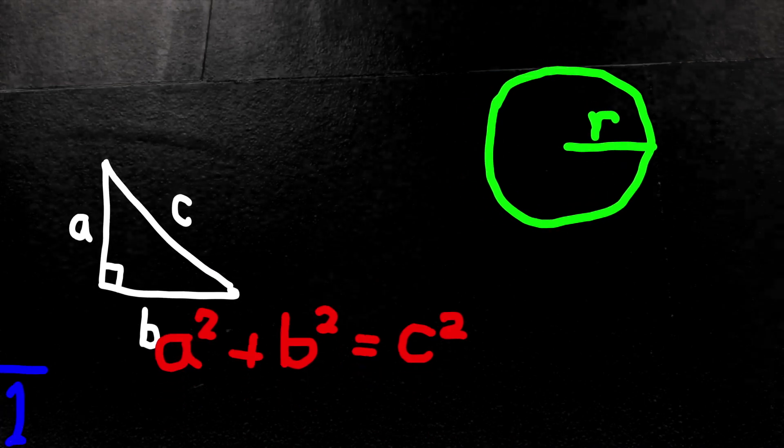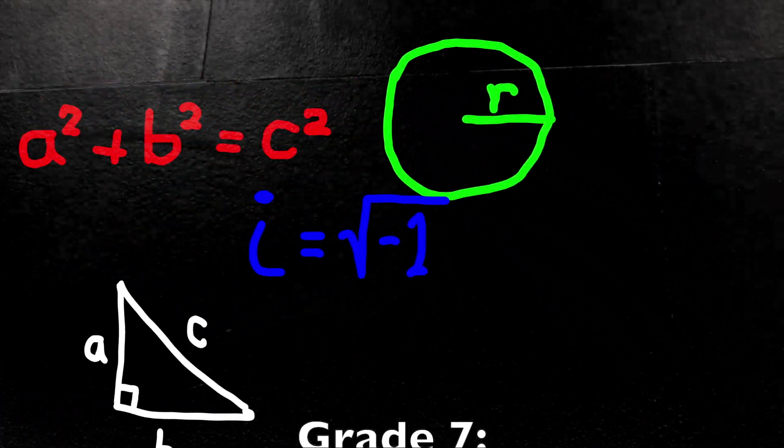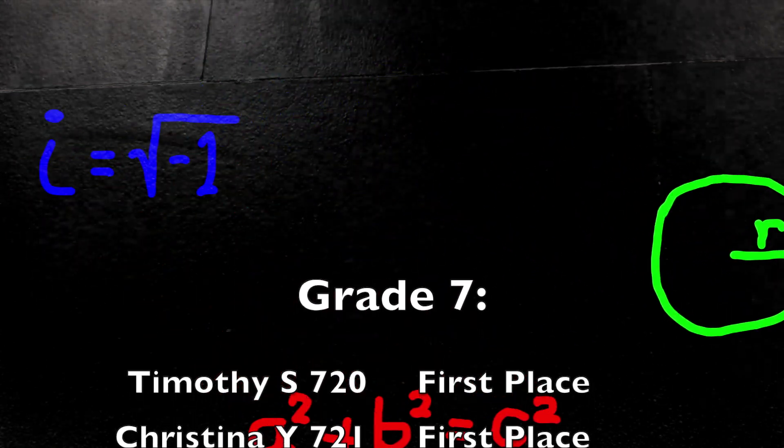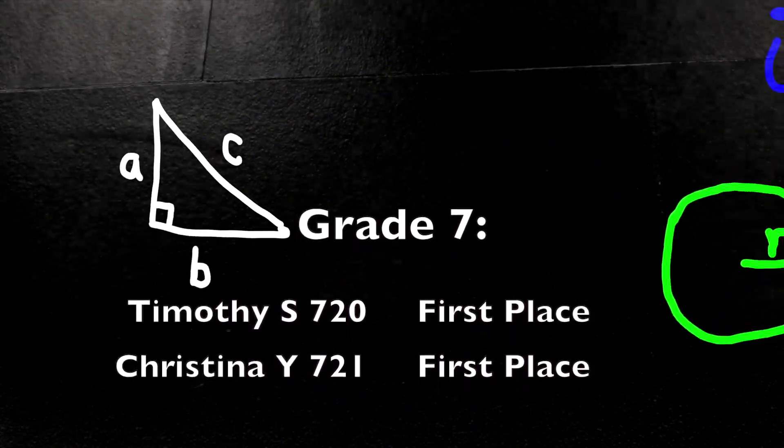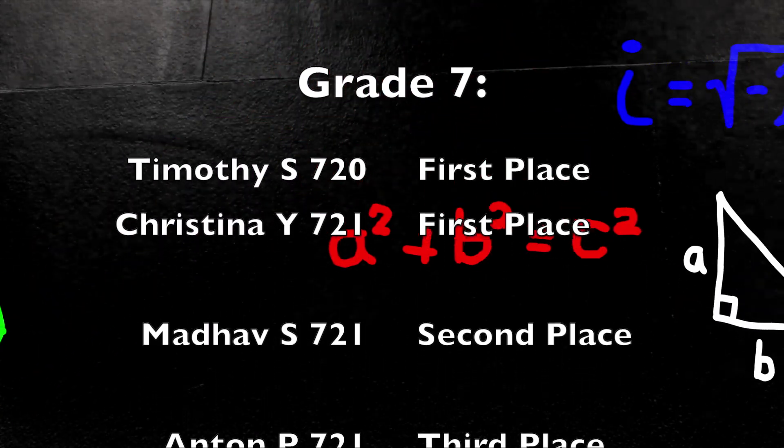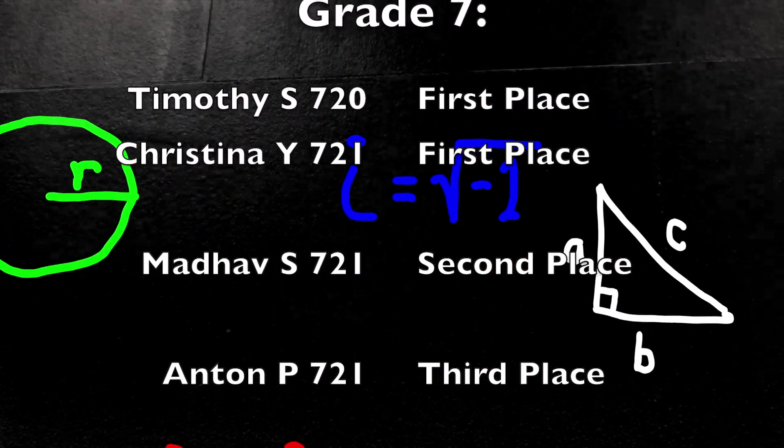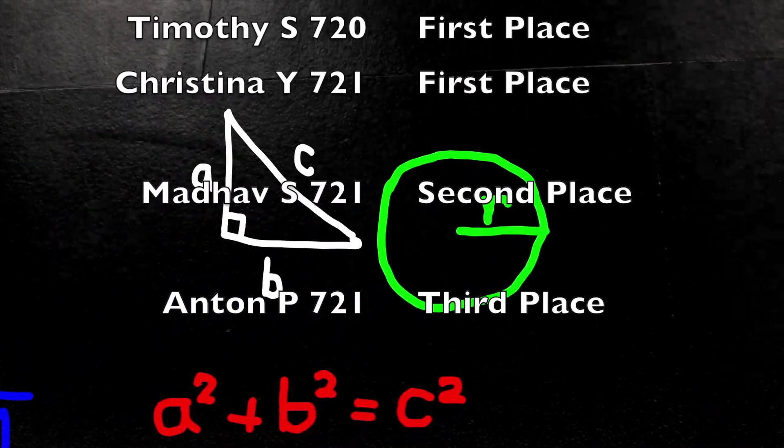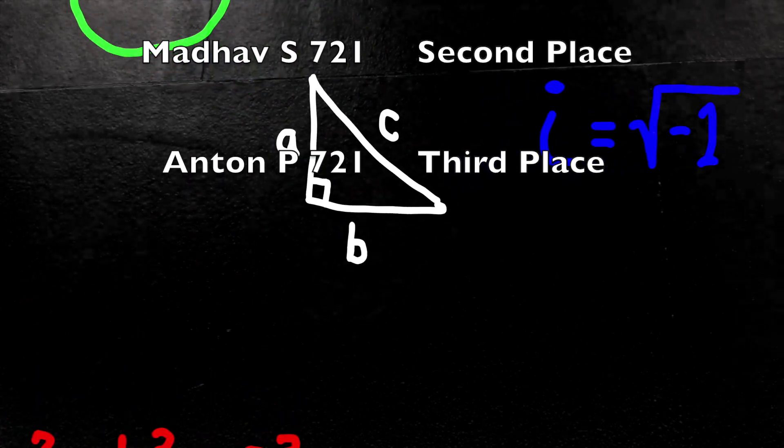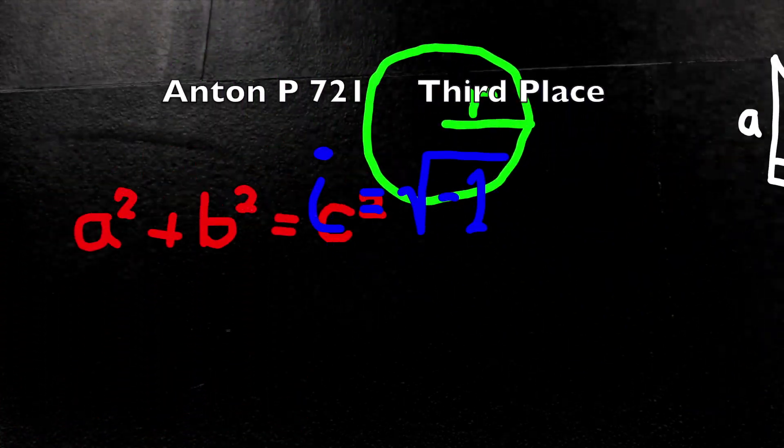For Grade 7, the first place was a two-way tie: Timothy S. from 720 and Christina Y. from 721. In second place, Mudav S. from 721. And in third place, Anton P. from 721.